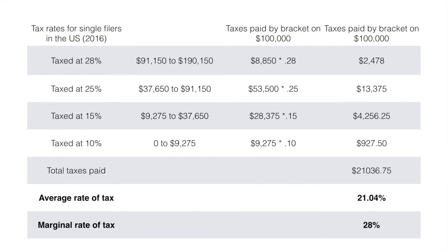In the final column, we can see how much tax has been paid at each level. We calculate the total taxes paid as $21,036.75. The average tax rate is that amount divided by $100,000 multiplied by 100%, giving us an average tax rate of 21.04%. The marginal rate of tax would still be 28%, as the next dollar earned by this person would be taxed at that amount.